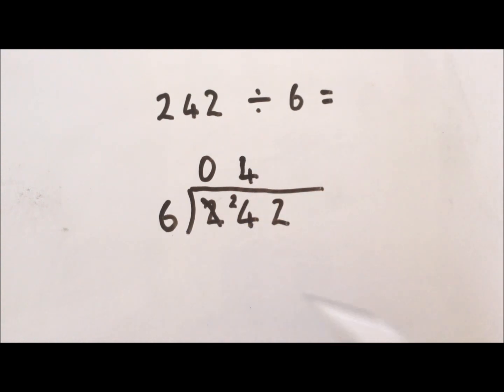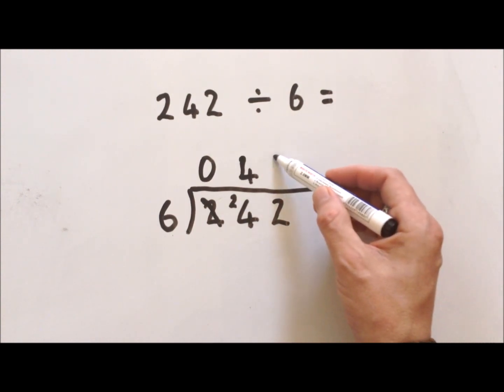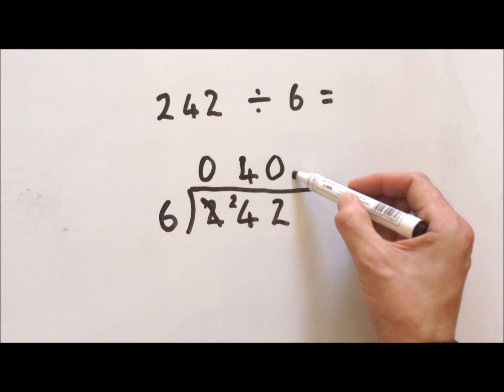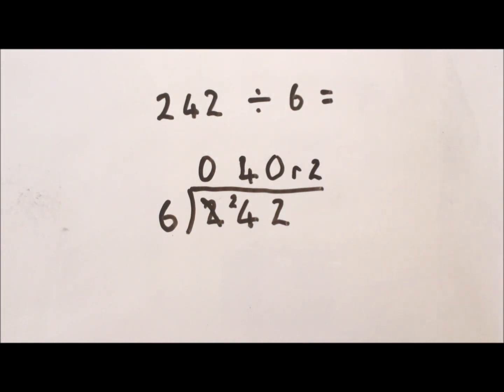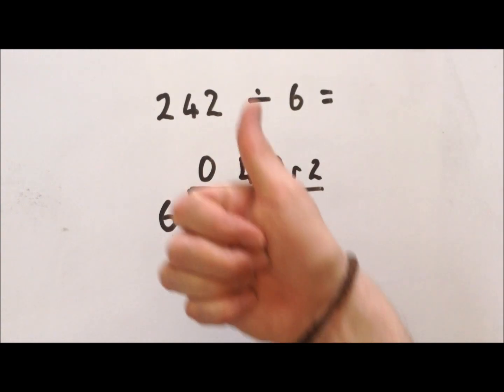We move to our next number. How many sixes can we get out of 2? Well, we can't do that, so we have to put a 0 and then we have to make that our remainder. So 40 sixes go into 242 with a remainder of 2. That's been bus stop division with remainders. I've been Mr. Maths, thank you very much.